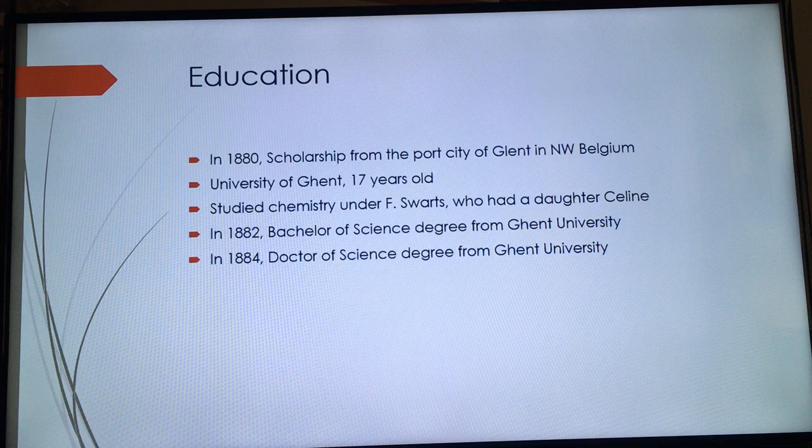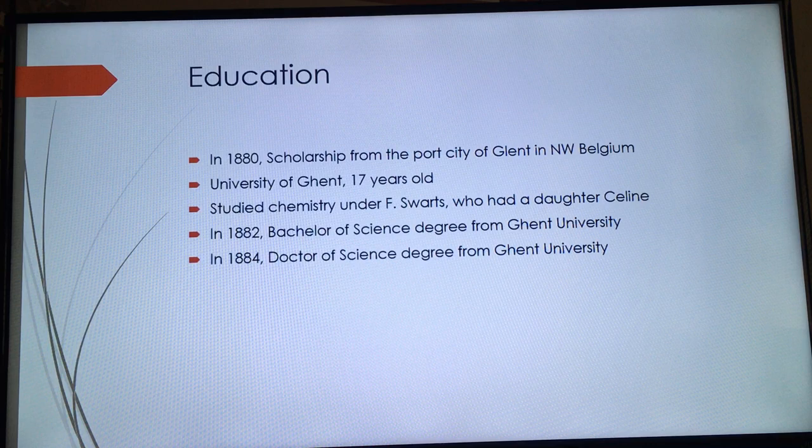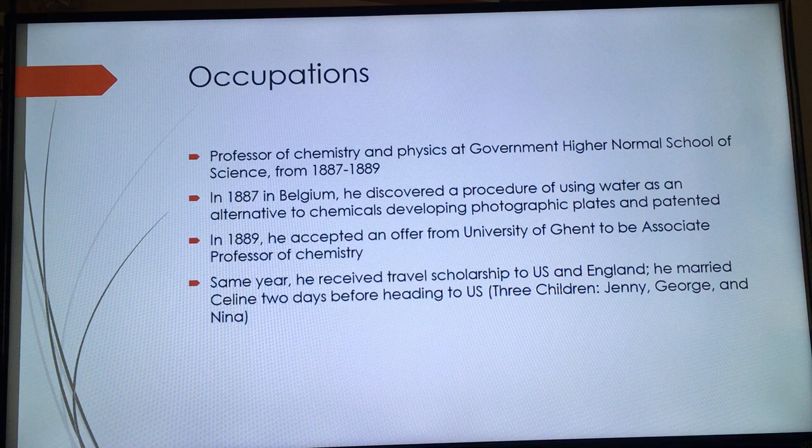He studied chemistry under F. Swarts, who was his mentor at the time, and Swarts had a daughter named Céline. In 1882, Baekeland earned his Bachelor of Science degree from Ghent University, and in 1884 he received his Doctor of Science degree from the same university.